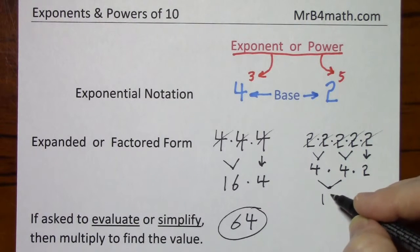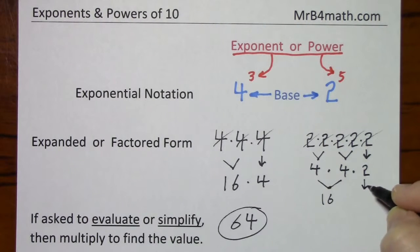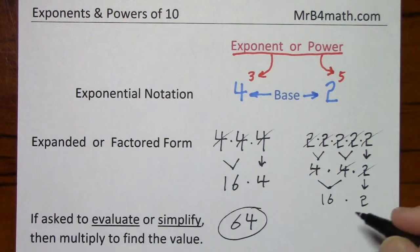So this gives us 4. Bring down the 2. So I've used these up. And then 16 times 2 is 32.